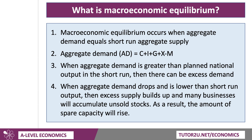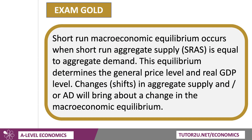Think of this as a movement away from the PPF — you're moving back inwards and the level of spare capacity goes up. Short-run equilibrium at a macro level occurs when short-run aggregate supply is equal to aggregate demand. This equilibrium point essentially determines the general price level and also the level of real GDP in an AD-AS diagram.